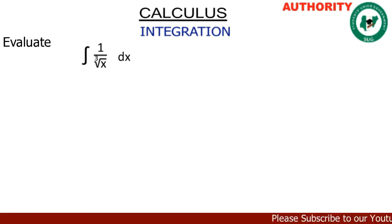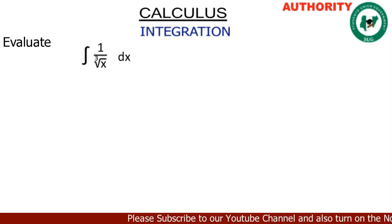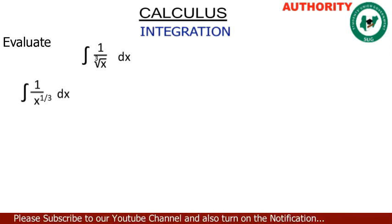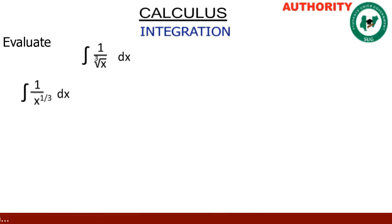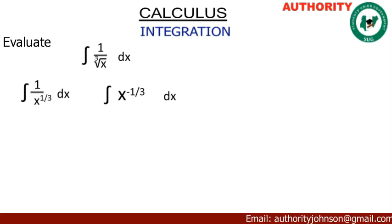We're going to rewrite this. 1 all over the cubic root of x — the cubic root of x can be written as x raised to the power 1/3. So that means we're going to have the integral of 1 all over x raised to the power 1/3, and we discover that this 1 all over x raised to the power 1/3 can be written as the integral of x raised to the power negative 1/3.